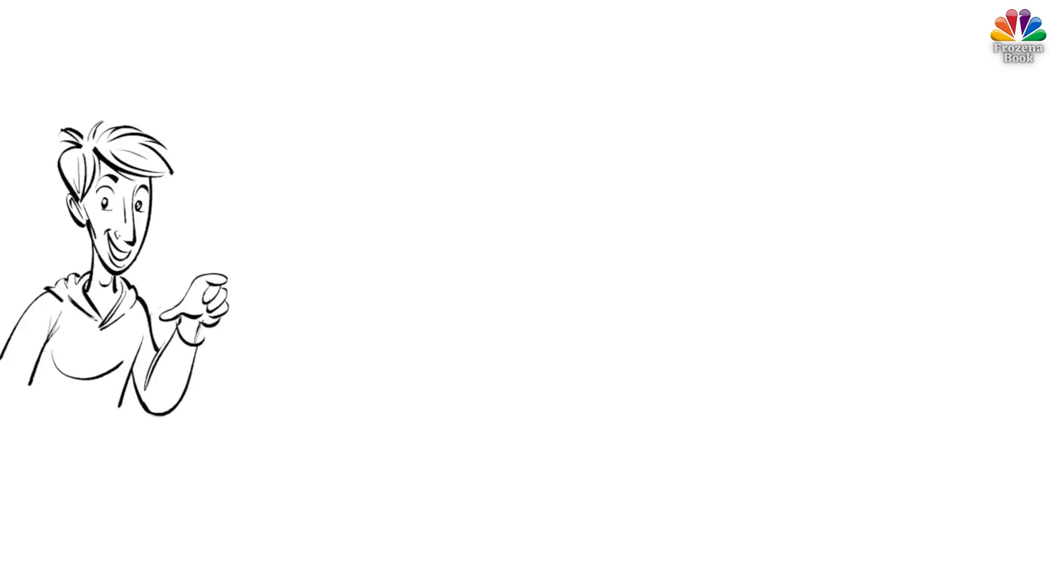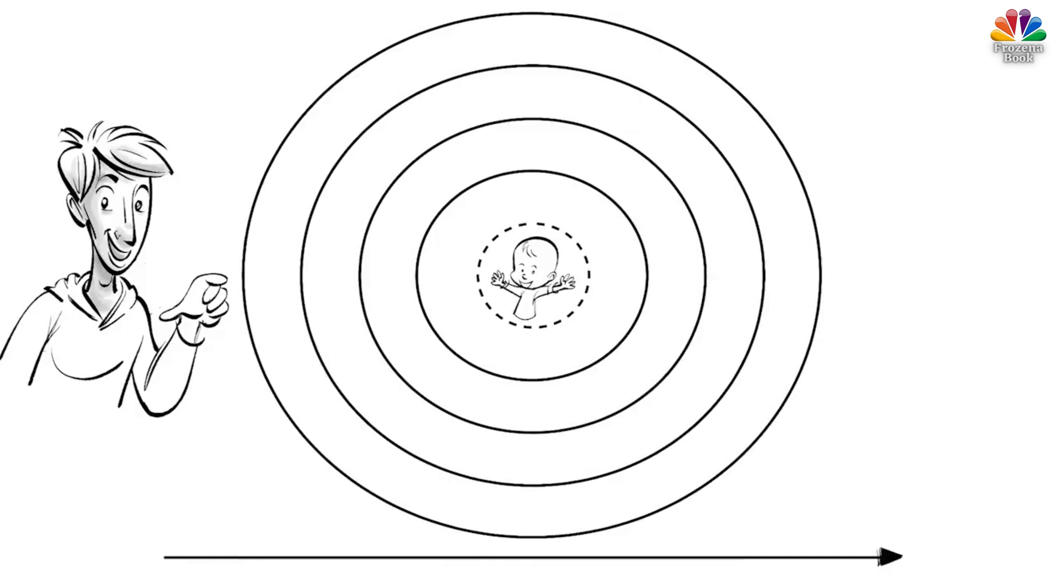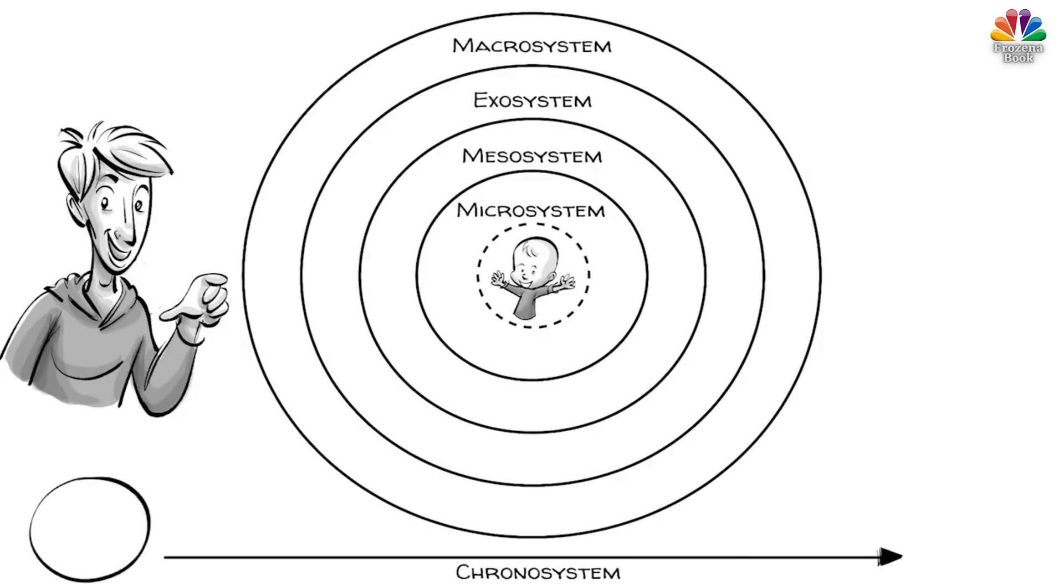Now it's your turn. Make five circles, draw yourself in the center, and add a timeline at the bottom. Then, put all the people, institutions, and forces that affect you through the five different systems. On the timeline below, you can add some major events from the past, and those you expect in the future.